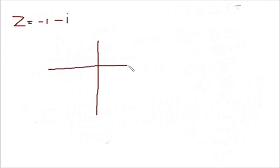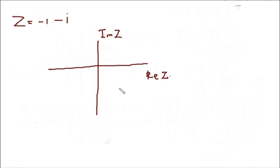A typical Argand diagram should look like this. This is the imaginary part of z, and this is the real part of z. These are the positive and negative points of the imaginary parts, and the positive points of the real part.